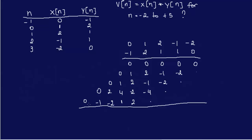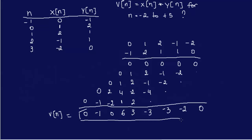Now we add all of them together, column by column from the left. We have: zero, minus one, and adding across — zero, two minus two is zero — then six, then zero, zero, zero, minus three, minus five giving minus three, minus three again, minus two, and zero. This is your v of n — your final answer right there.